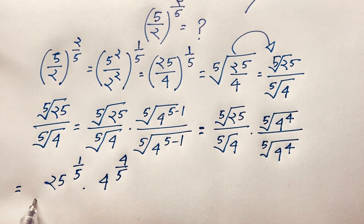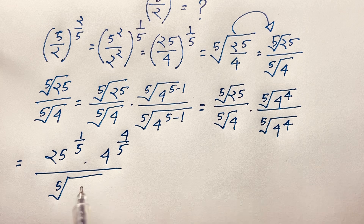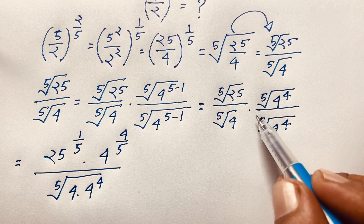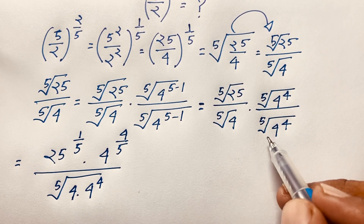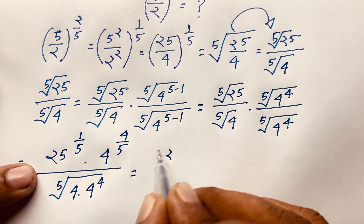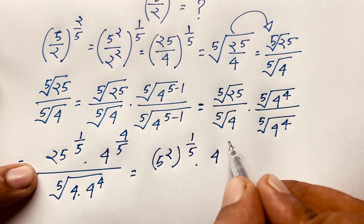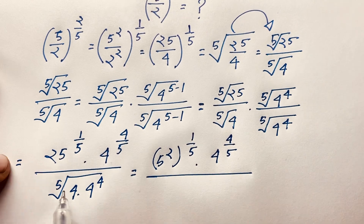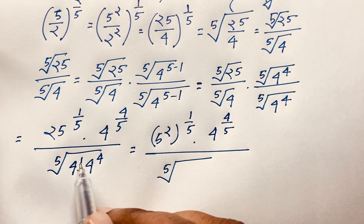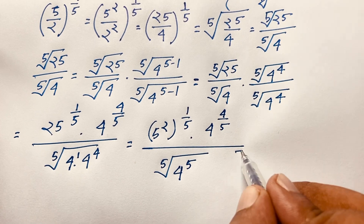We bring the exponent 1/5 outside and use the law n-th root of a × n-th root of b = n-th root of (a×b). Taking the 5th root of (25 × 4^4), then noting 4^4 in the numerator and 4 in the denominator, the exponent on 4 in the denominator means we subtract: 4/5 − 1 = (4−5)/5 = −1/5. So we have 5^(2/5) × 4^(−1/5).